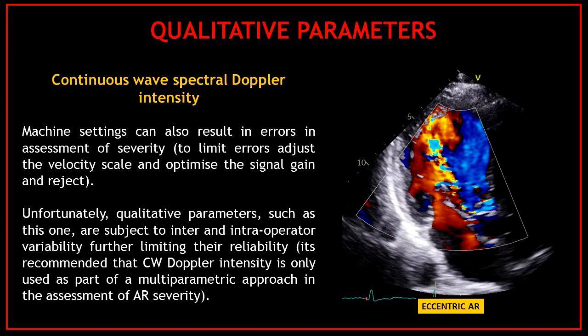Machine settings can also result in errors in assessment of severity. To limit errors, adjust the velocity scale and optimize the signal gain and reject. Unfortunately, qualitative parameters such as this one are subject to inter- and intra-operator variability, further limiting their reliability. That's why it's recommended that continuous wave Doppler intensity is only used as part of a multi-parametric approach in the assessment of aortic regurgitation severity.